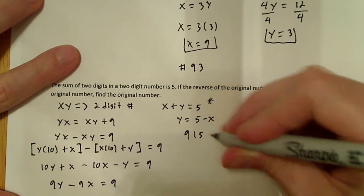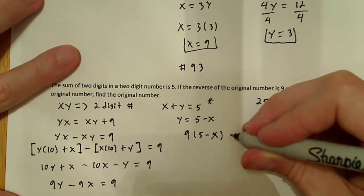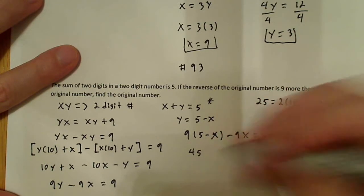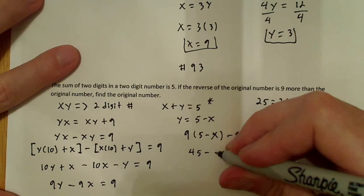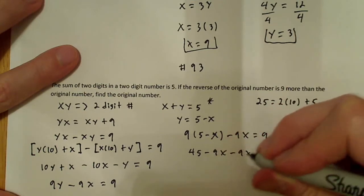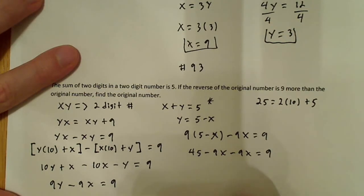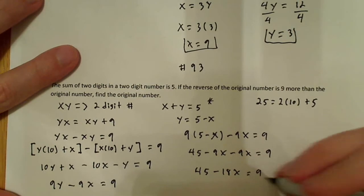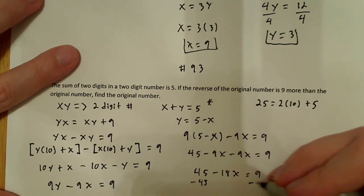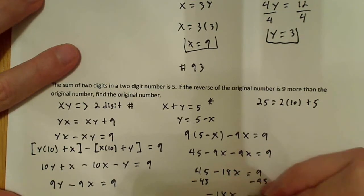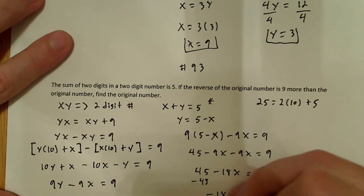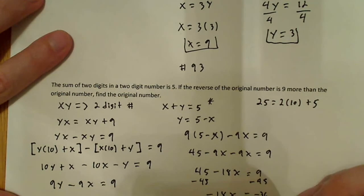This will be 9 times 5 minus x minus 9x equals 9. So 9 times 5 is 45 minus 9x, minus 9x, equals 9. So minus 9x and minus 9x is negative 18x. This ends up being 45 minus 18x equals 9. What I want to do now is subtract 45 from both sides. What I get is negative 18x equals negative 36. Divide both sides by negative 18, and I get that x equals 2, because the negatives cancel out.